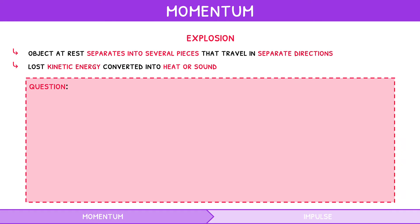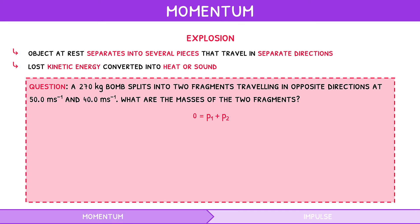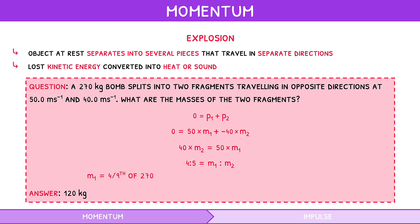Let's look at an example question. A 270kg bomb splits into two fragments travelling in opposite directions at 50 m/s and 40 m/s. What are the masses of the two fragments? So 0 equals momentum of fragment 1 plus momentum of fragment 2. Thus: 0 equals 50 times mass 1, plus (−40) times mass 2. This rearranges to 40 times mass 2 equals 50 times mass 1, giving a ratio of mass 1 to mass 2 of 4:5. Hence mass 1 is 4/9 of 270kg, which is 120kg, and mass 2 is the remainder, which is 150kg.